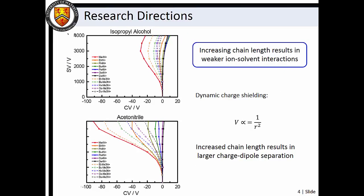If we increase the length of one of the alkyl chains, we see that the strength of interaction with the solvent vapor decreases. This effect is more pronounced when the chain length of all four alkyl groups is increased. We interpret this as a dynamic charge shielding effect.